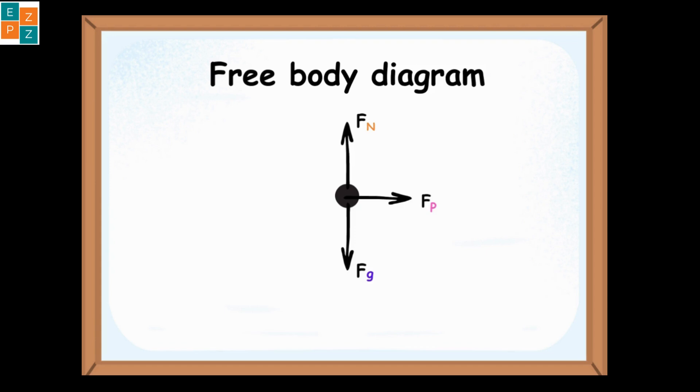Next, draw the right arrow showing the applied force towards the right and the left arrows showing the force of friction and air resistance acting towards the left on the object.